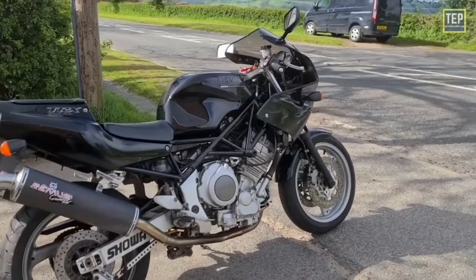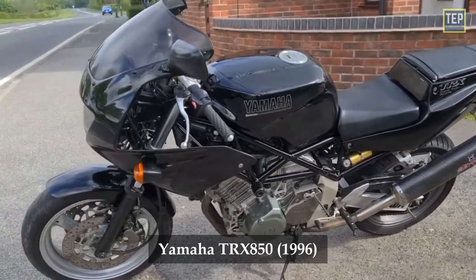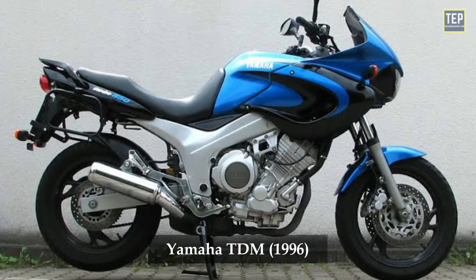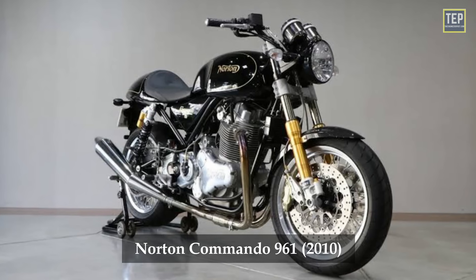The first production 270-degree straight twin motorcycle engines were fitted to the Yamaha TRX-850 and Yamaha TDM. Later examples include the Triumph Thunderbird, Norton Commando 961,